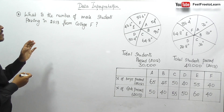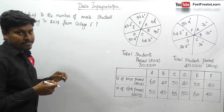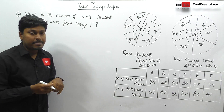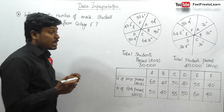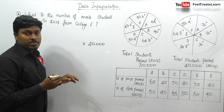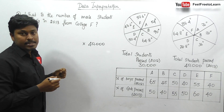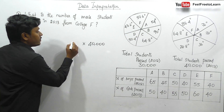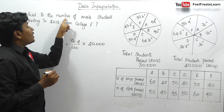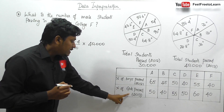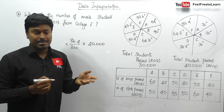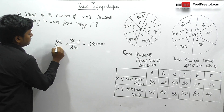Question number 2: What is the number of male students passing in 2013 from College F? Our target is to find how many male students passed in College F in the year 2013. In the year 2013, we know the total number of students is 40,000. Out of this 40,000 students, College F is 86.4 degrees, so 86.4 divided by 360 gives students in College F.